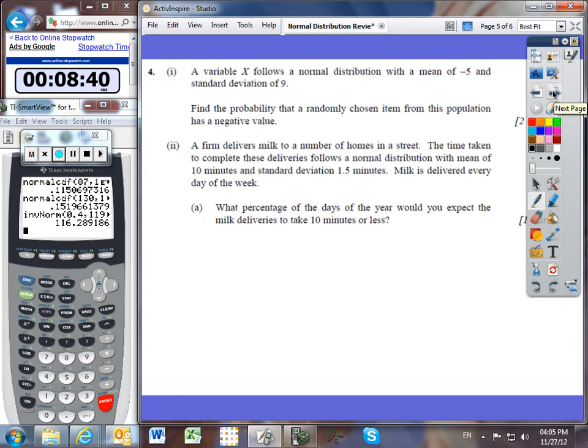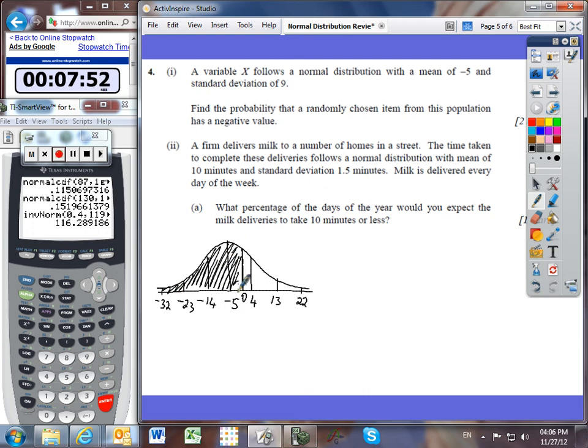And the last problem you were assigned is number 4. A variable follows a normal distribution with a mean of negative 5 and a standard deviation of 9. I'm going to draw a picture of this. So we've got a mean at negative 5 and a standard deviation of 9. So 9 above that is 4, 9 above that is 13, 9 above that is 22. Going in the other direction, negative 14, negative 23, and negative 32. It says find the probability that a randomly chosen item from this population has a negative value. So negative means everything less than zero. And so I really need to find the probability or the area of all of this shaded region.